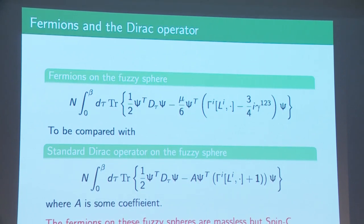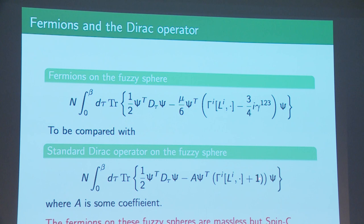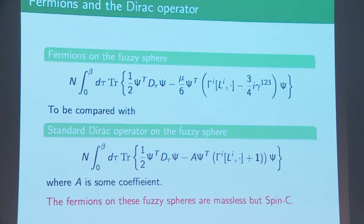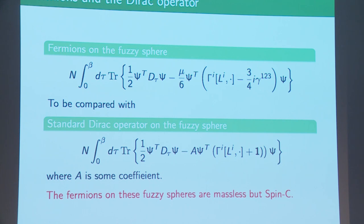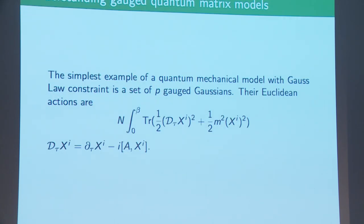If I look at the Dirac sector of this — which people won't usually do — focusing on the fuzzy sphere sector, we get the standard time derivative, we get ψ^T γ_i L_i with a coefficient of -3i/4 times that. Comparing with the standard fuzzy sphere Dirac operator on the fuzzy sphere, which has γ_i L_i + 1, there's a slight difference. The Dirac fermion has not become massive — in fact there's a spin-c structure with an additional coupling to the spin connection.